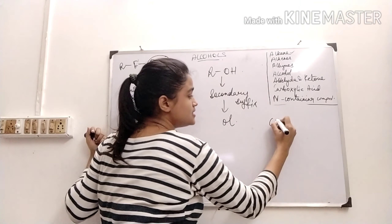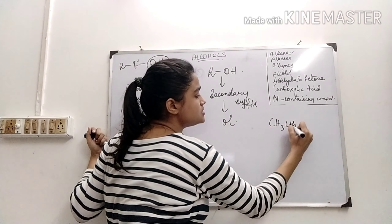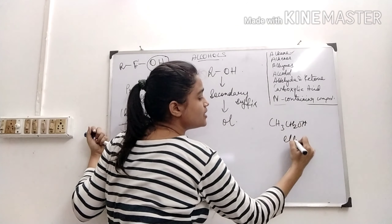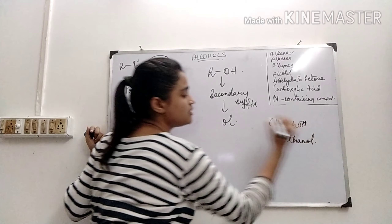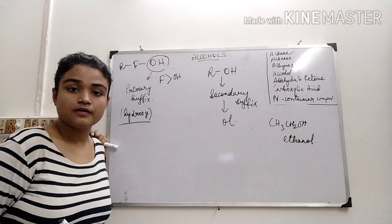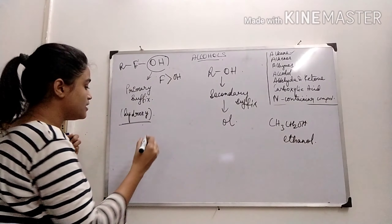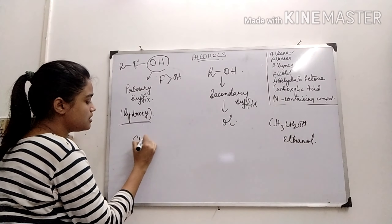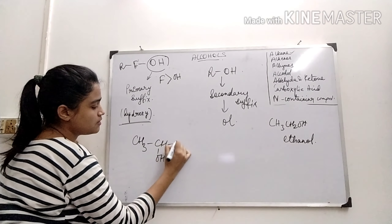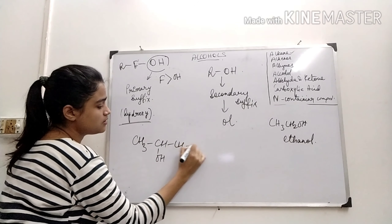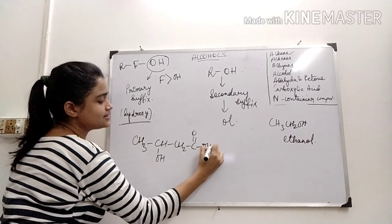Like if it is CH3 — a two-carbon compound — it is ethanol. Now, in this case, an example for the prefix scenario is like this.